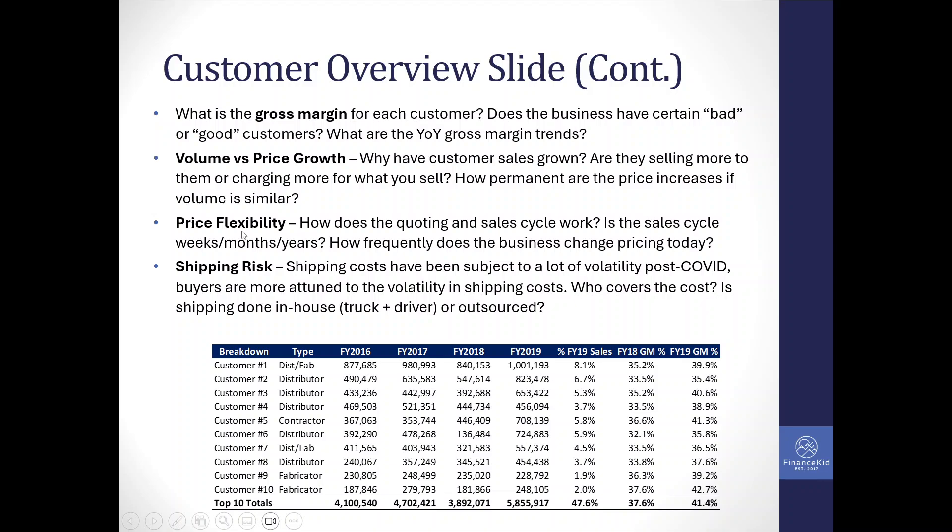Another key consideration is price flexibility and the quoting/sales cycle. Are you bidding on projects months or years in advance, or do you bid and win immediately? Longer bidding cycles make it stickier to change customers and give more certainty around the medium-term pipeline, but also limit your ability to quickly scale because you have to wait months for the next job. If it takes shorter to price jobs, you can quickly grab work — but you can also quickly lose it. Understanding the bidding cycle is important.